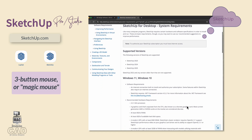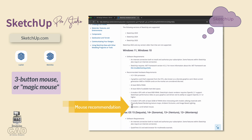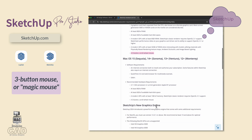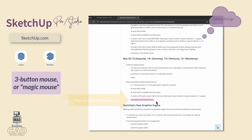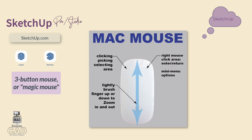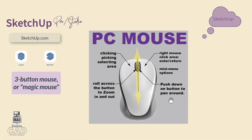I cannot emphasize enough as a technology instructor: make sure that you also purchase a three-button mouse. SketchUp officially recommends a three-button mouse as a tool for digital modeling, drafting, and rendering for both the PC and Mac. If you are working on a Mac, I recommend the Magic Mouse. If you are working on a PC, I recommend the three-button mouse where the third button located in the center acts as both a button and a roller bar.